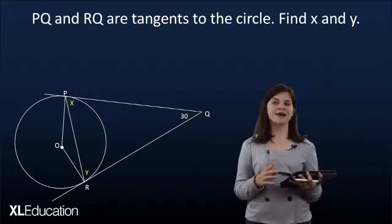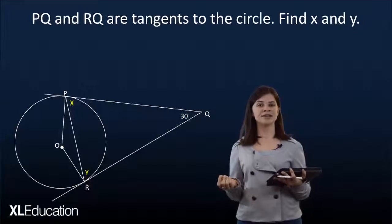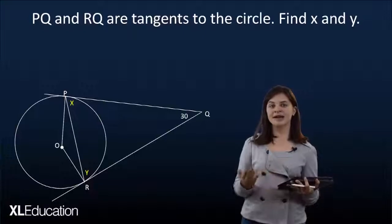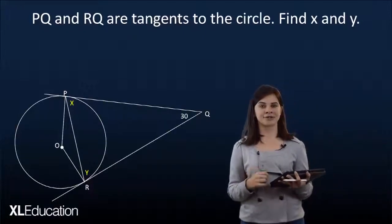And the last one, which is usually the most intimidating of the theorems, is actually one of the more intuitive ones where the two lines, the two tangents coming from the same point are equal in length. And this will usually give us information about an isosceles triangle angle and help us find angles that are equal to each other.